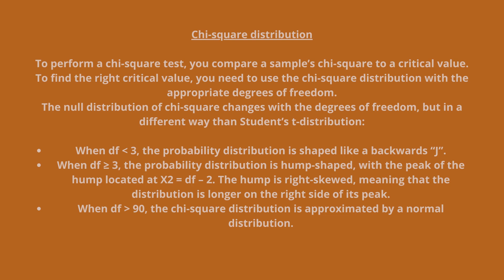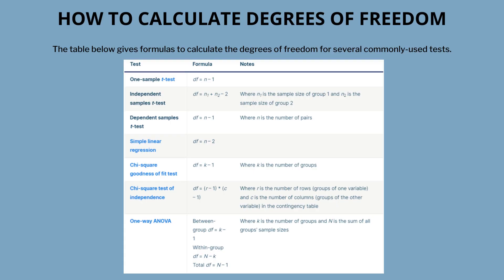When df < 3, the probability distribution is shaped like a backwards J. When df ≥ 3, the probability distribution is hump-shaped, with the peak of the hump located at χ² = df − 2. The hump is right-skewed, meaning the distribution is longer on the right side of its peak. When df ≥ 90, the chi-square distribution is approximated by a normal distribution.